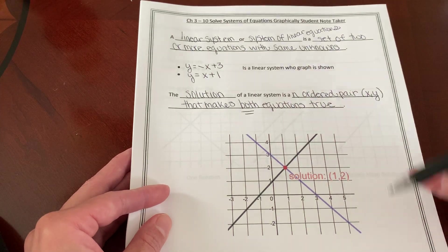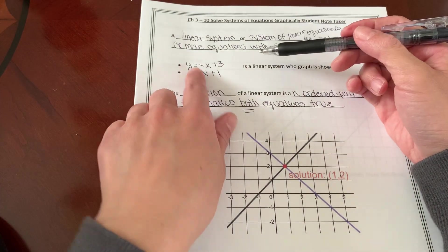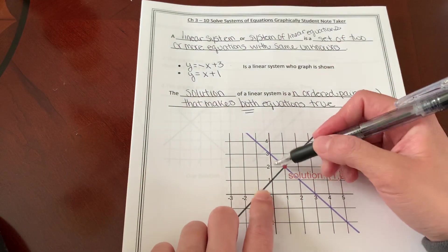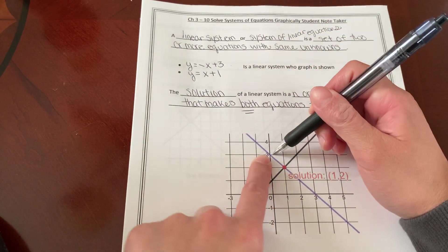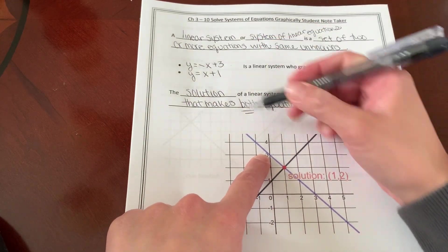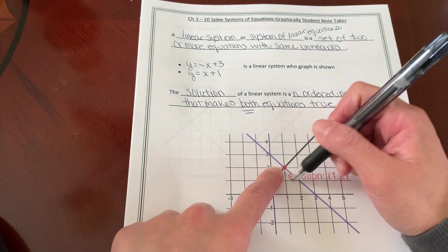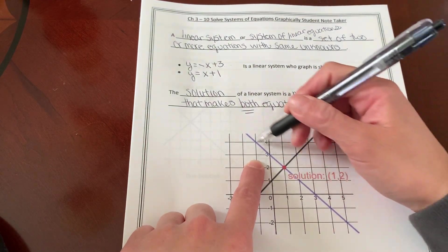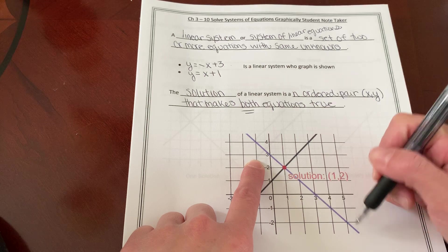So if I were to graph y equals negative x plus 3, I'm going to begin at positive 3 and I'm going to move down my slope. Down 1, right 1, down 1, right 1. So y equals negative x plus 3 is a purple line.